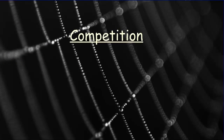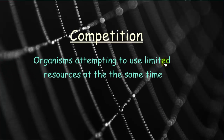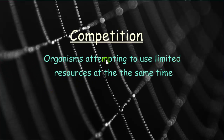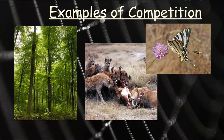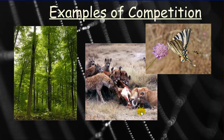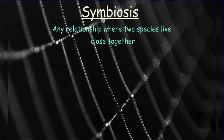The second interaction is competition, where more than one organism attempts to use a limited resource at the same time. It's straightforward — they're competing over the same resource. We can see competition in nature: tall trees compete with smaller plants for sunlight, a lion and hyena compete over a carcass, and a butterfly and bee compete over the same limited resources.